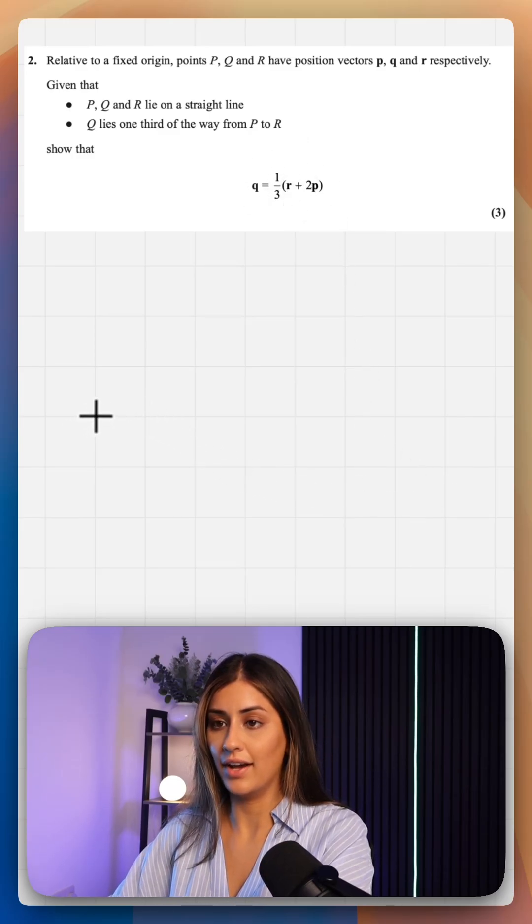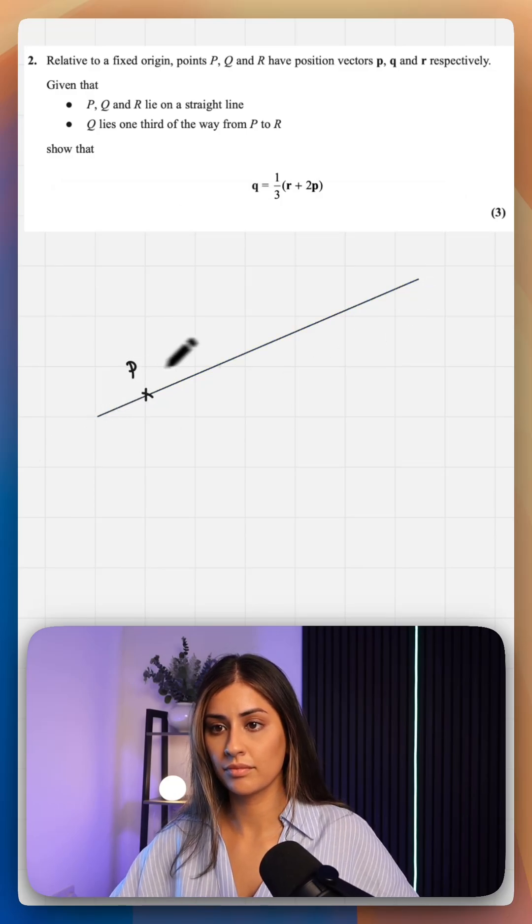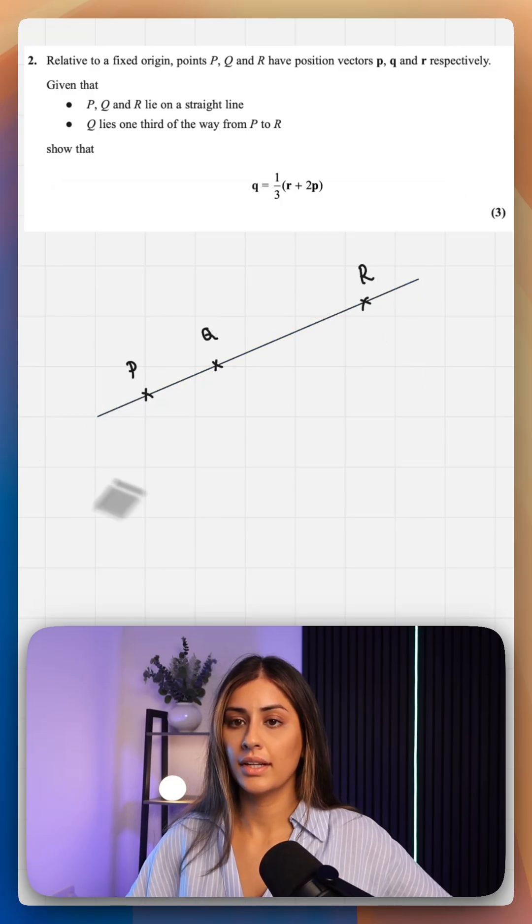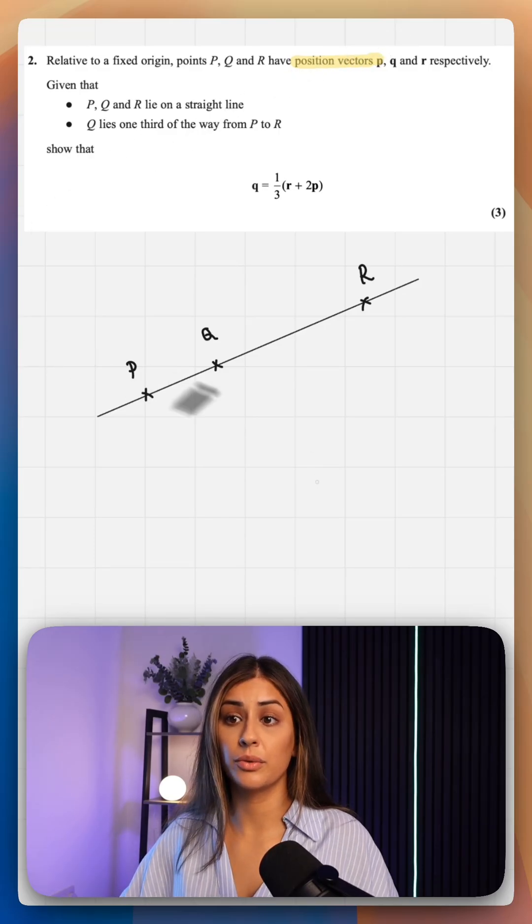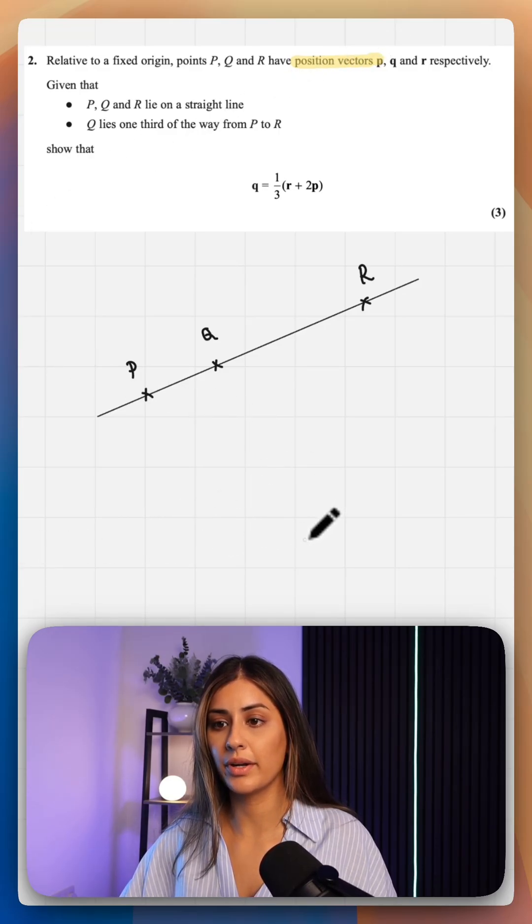Okay, let's visualize this first. Now these are position vectors which means they're relative to a fixed origin. We can just draw in a fake origin, it doesn't matter how it looks.